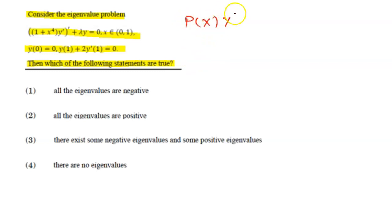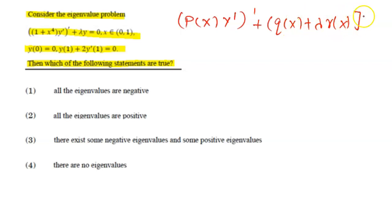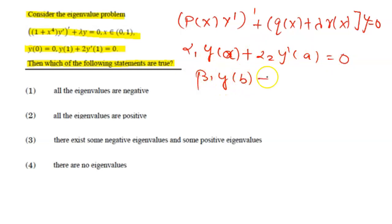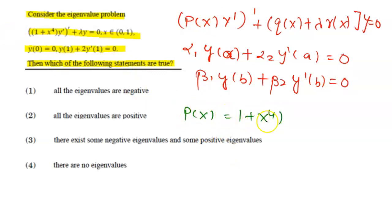This problem is given in the Sturm-Liouville format: d/dx[p(x)y′] + [q(x) + λr(x)]y = 0, with boundary conditions α₁y(a) + α₂y′(a) = 0 and β₁y(b) + β₂y′(b) = 0. By comparison, p(x) = 1 + x⁴, and the boundary point a equals 0 and b equals 1.